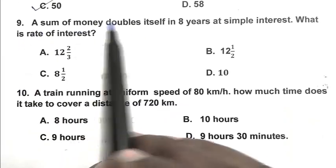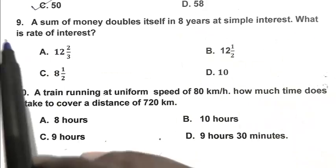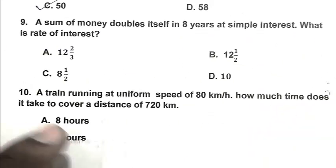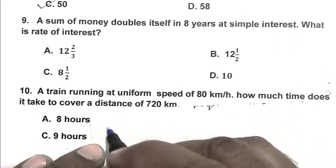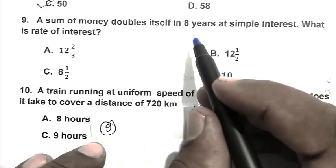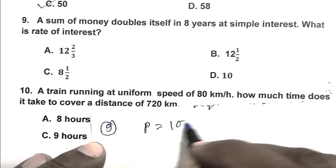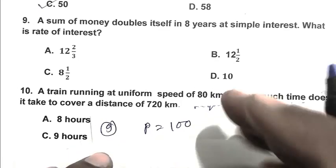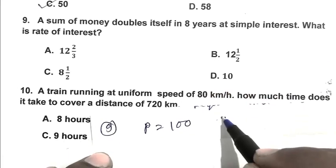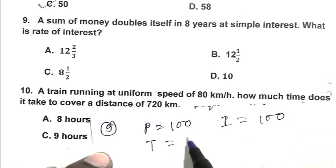Question number 9. A sum of money doubled itself in 8 years at simple interest. What is the rate of interest? So let's take 100 as principal. Principal is 100, when the amount doubles itself the interest is also 100, time is 8 years.